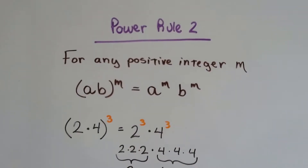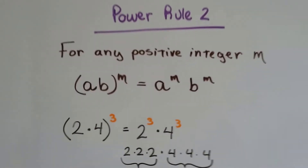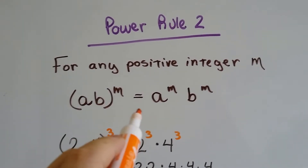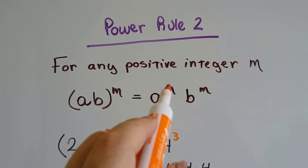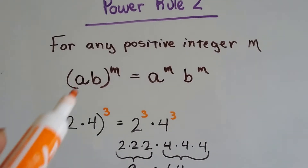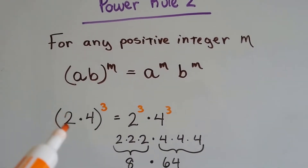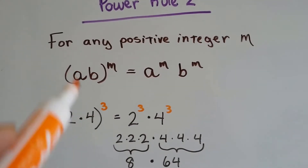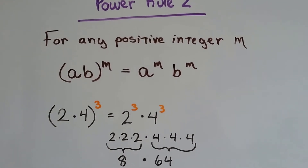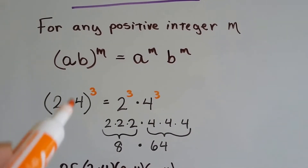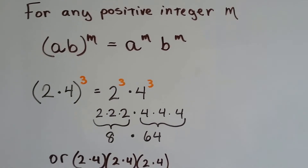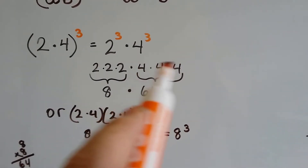Here's power rule number 2. For any positive integer m, if we've got a and b on the inside of the parentheses, that whole thing is the base. That means a to the m power times b to the m power. So if a was 2 and b was 4, it would be 2 times 4 — because when they're next to each other it means multiplication — so we've got 2 times 4 to the 3rd power. We could do 8 to the 3rd power, or we could say 2 to the 3rd power times 4 to the 3rd power.